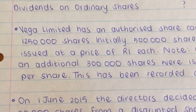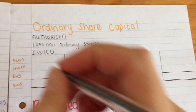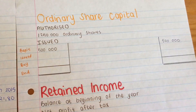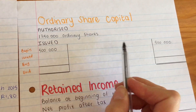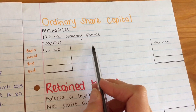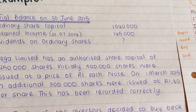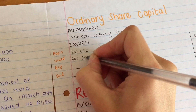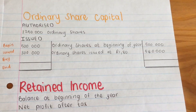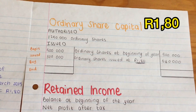Going back to the information: initially 500,000 shares were issued at one rand each. So at the beginning I had 500,000 shares, and the rand amount at one rand each will be R500,000. We need to write there: 'ordinary shares at the beginning of the year.' Then we issued 300,000 shares at R1.80, so issued 300,000 shares at R1.80 gives R540,000. It's very important to write the R1.80 there because you actually get marks for it.